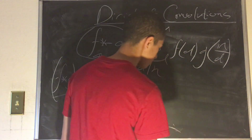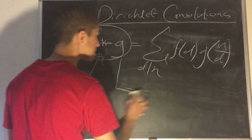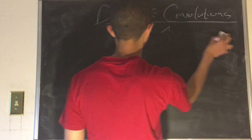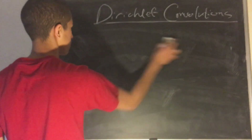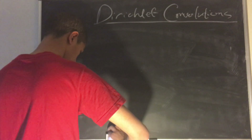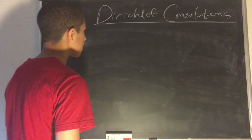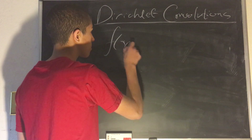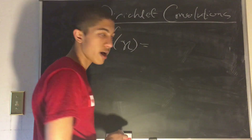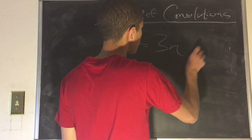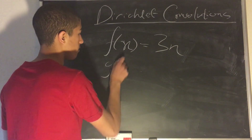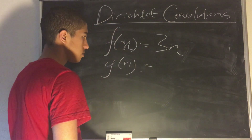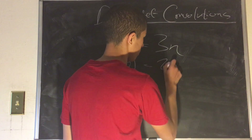Let's think about an example here. Let's say that f of n is equal to something simple like 3n, and g of n is equal to something simple like 2n.